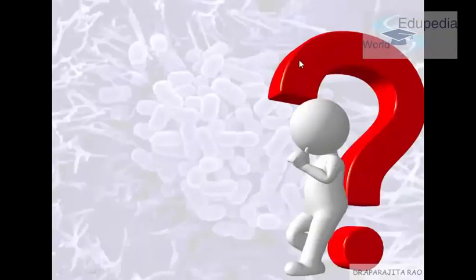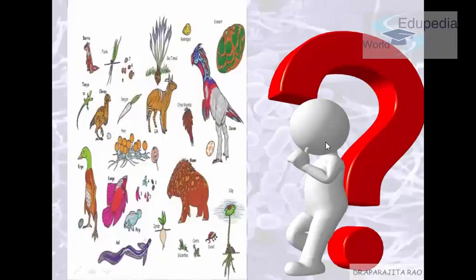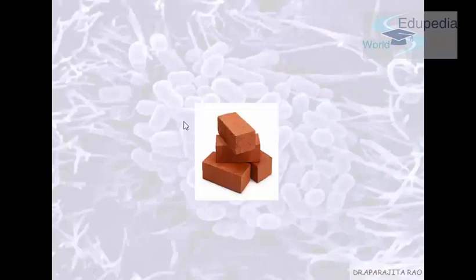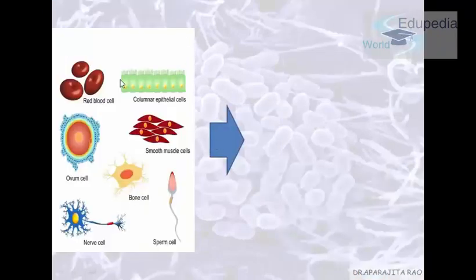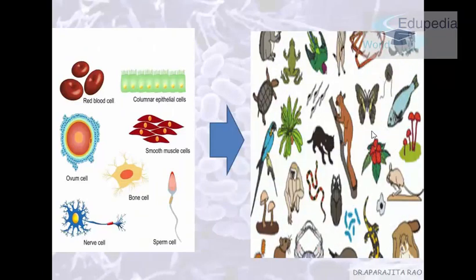Now you might be thinking, how can a cell — a single entity — make up all living organisms, be it plants or animals? The answer is: just like a brick can make all these houses of different shapes and sizes, similarly, cells can make all living organisms of different shapes and sizes.